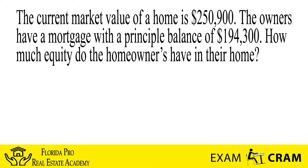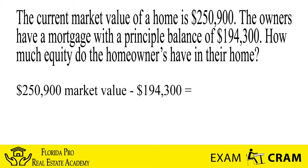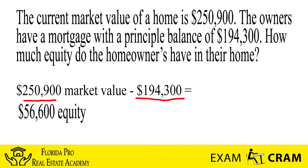Let's go ahead and take a look at this. In step one, all we need to do is take that $250,900 — that's the market value of the home. All we need to do is subtract the $194,300, which is what is owed on the principal mortgage of the home. That subtraction comes out to $56,600, which is a nice chunk of change they can use to maybe purchase another house or pay off other bills.